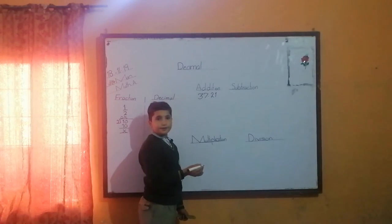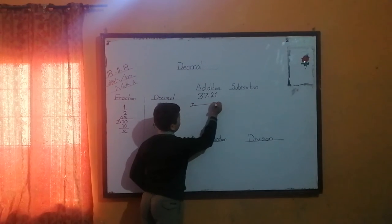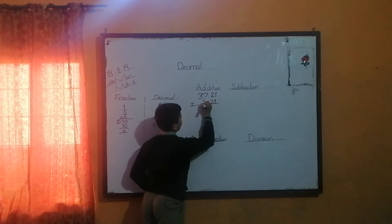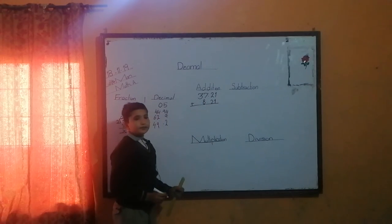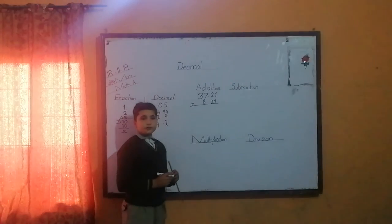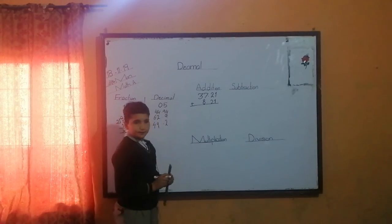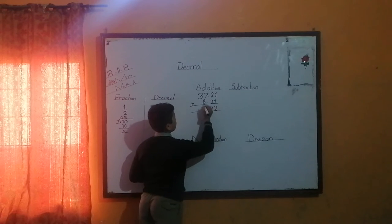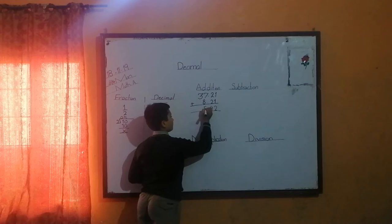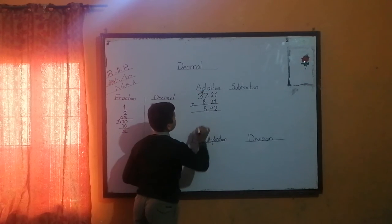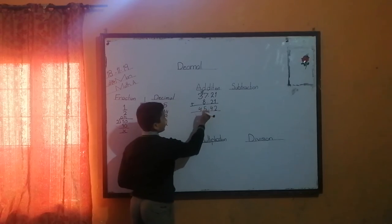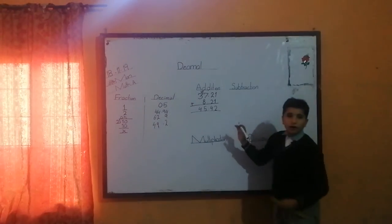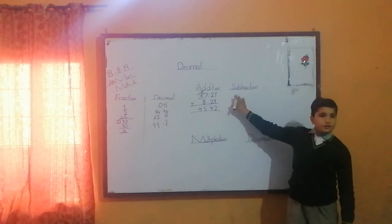I write 37.21. We add 8.21 to 37.21. The answer is 45.42. Now I will tell you about decimal subtraction.